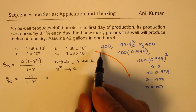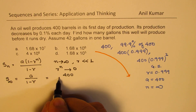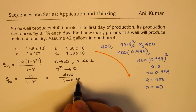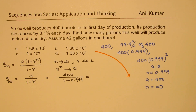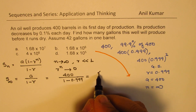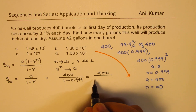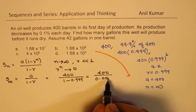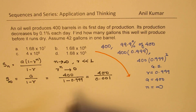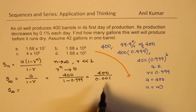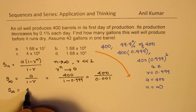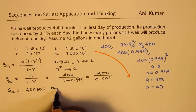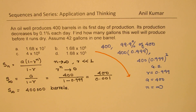In our case, the initial value A is 400, and the denominator will be 1 minus 0.999, which gives us 0.001. So that means the sum is equal to 400,000, and the units are in barrels.